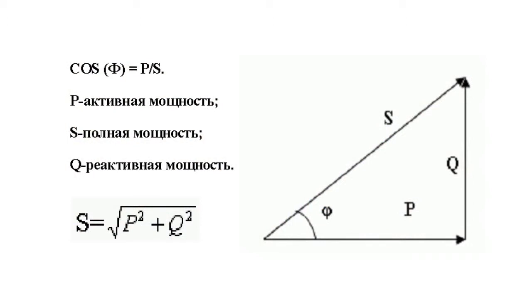The correlation between apparent and active power, expressed as the cosine of the angle between the vectors, is called the power factor.